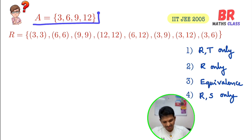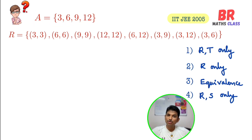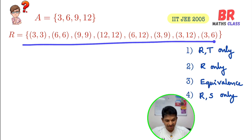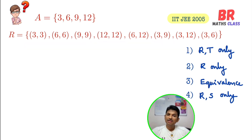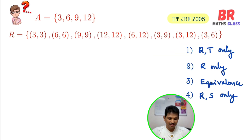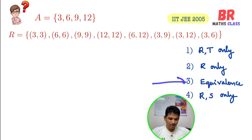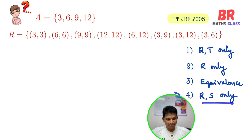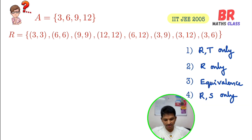See this question. They have given set A = {3, 6, 9, 12} and one relation is given. They are asking: what type is this relation? Options are: reflexive and transitive only, reflexive only, equivalence relation, or reflexive and symmetric only. Which option is correct?